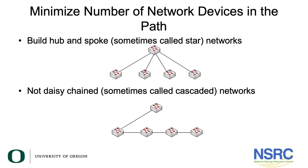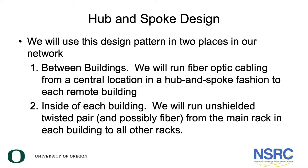Then somebody on the floor above that says, 'Hey, I hear you have some internet, can I get some?' And they simply run Cat5 or Cat6 cable down to the switch on the adjacent floor. You end up with these cascaded network elements where if one of them in the path fails, then everybody past that is out of service. This is why we use a hub-and-spoke design.